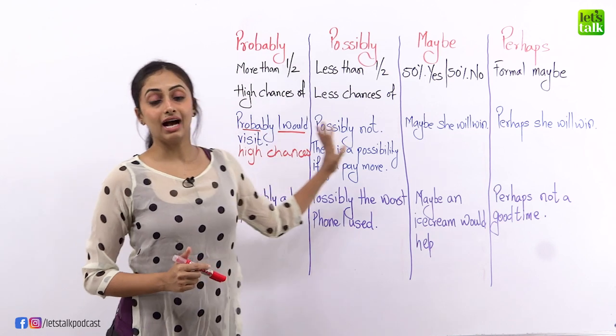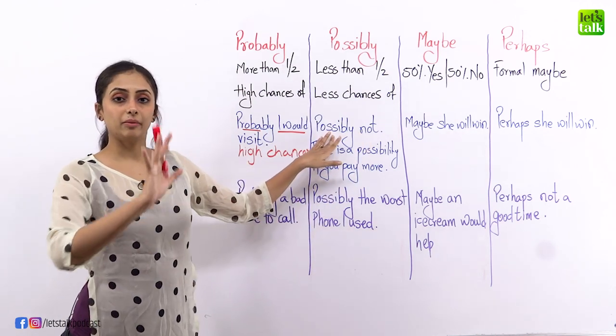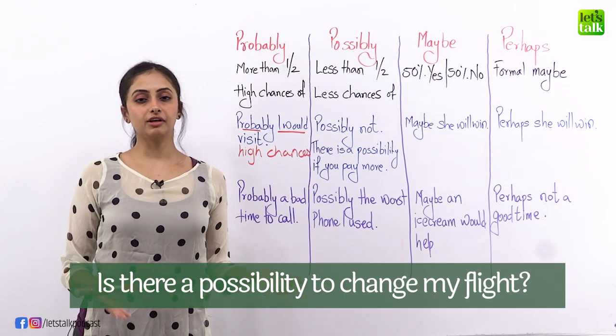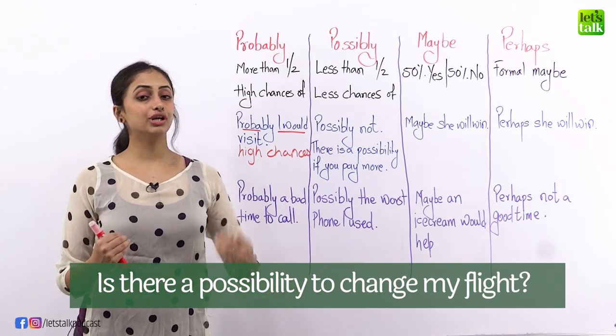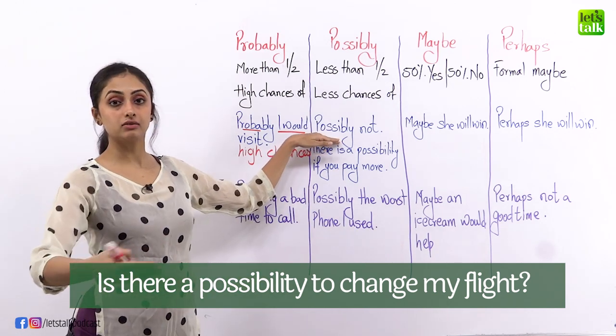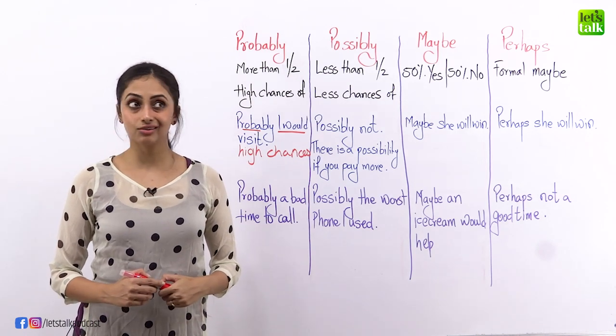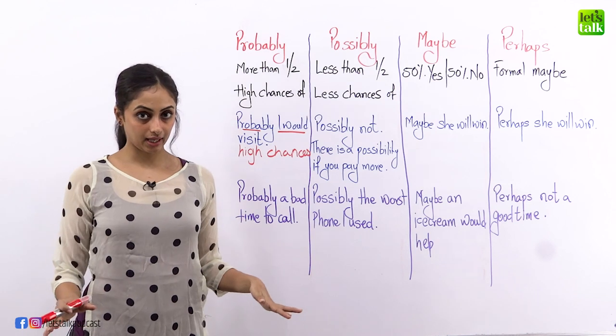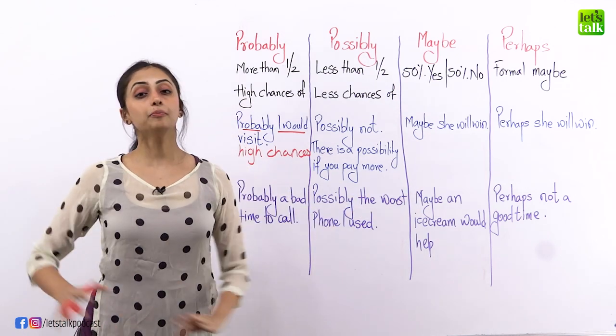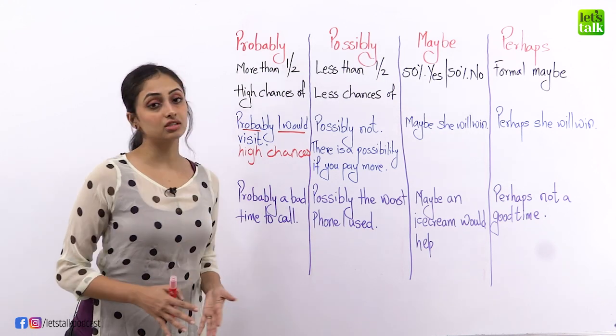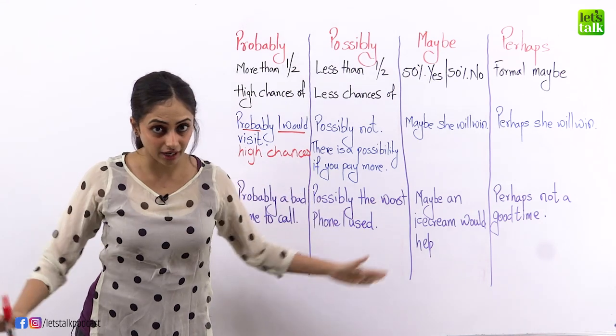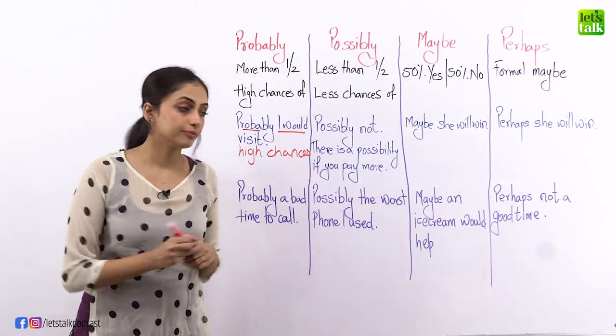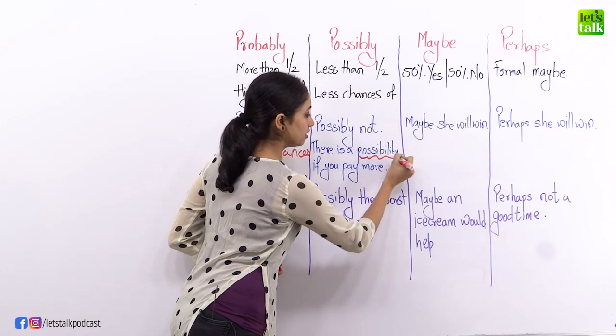Now let's say I'm at the airport, right? And I am asking an attendant or a manager, sir, is there a possibility of me changing the flight? And the attendant or the manager says, possibly not. I don't think so. What is he trying to say? He's trying to say that there are less chances of that happening. But I insist, I push him and I say, could you please try? I'm in an emergency, I need to change my flight ASAP. Is there anything I can do to change my flight? And he says, there is a possibility if you pay more.